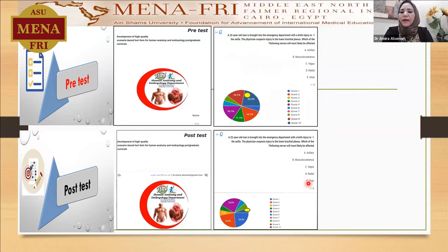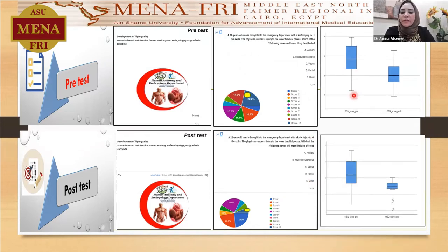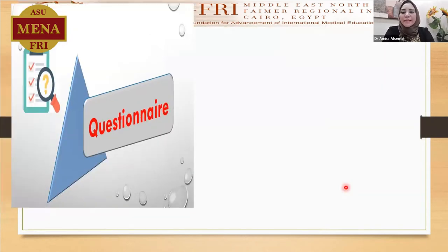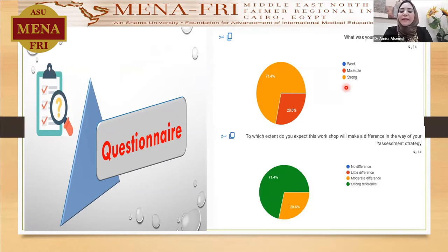The statistical analysis displayed a significant increase in the post-intervention mean score for single-best answer and modified stem question compared to the pre-intervention mean. Moreover, the training questionnaire was designed and carried out to assess the level of staff member satisfaction, which displayed 70 to 100 percent strong satisfaction. It also assessed the expectation of staff members about whether this session would make changes in their assessment strategies, which displayed 70 to 100 percent strong agreement and 29 percent modest agreement.